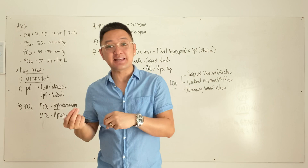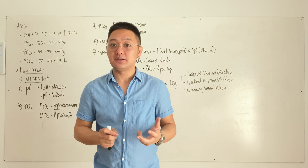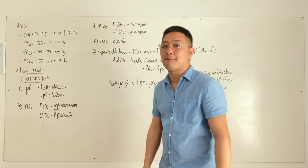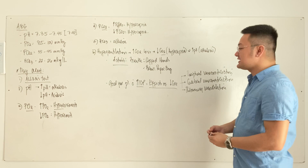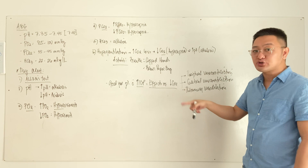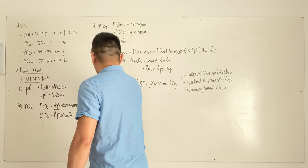If any of these three elements — CSF volume, brain volume, or blood volume — is abnormal, the other elements will compensate. This is known as the Monroe-Kelly hypothesis or Monroe-Kelly doctrine. For more detail, check the previous video on neurologic disturbances. In summary, decreased CO2 (hypocapnia) is beneficial for patients with elevated intracranial pressure.